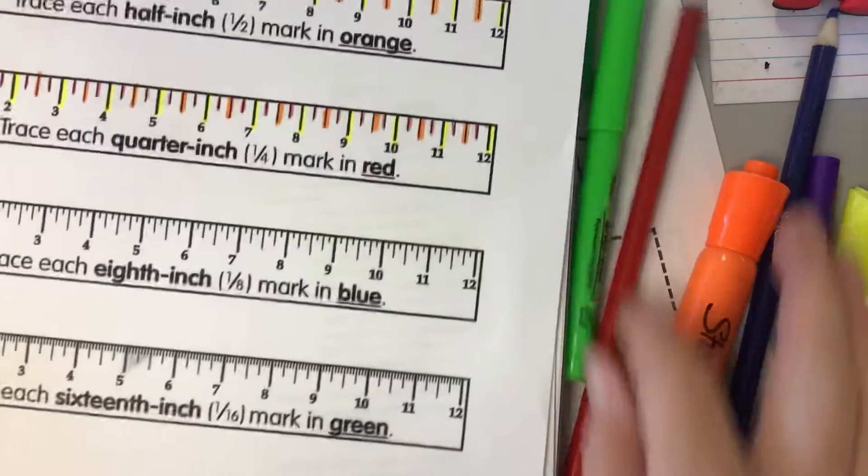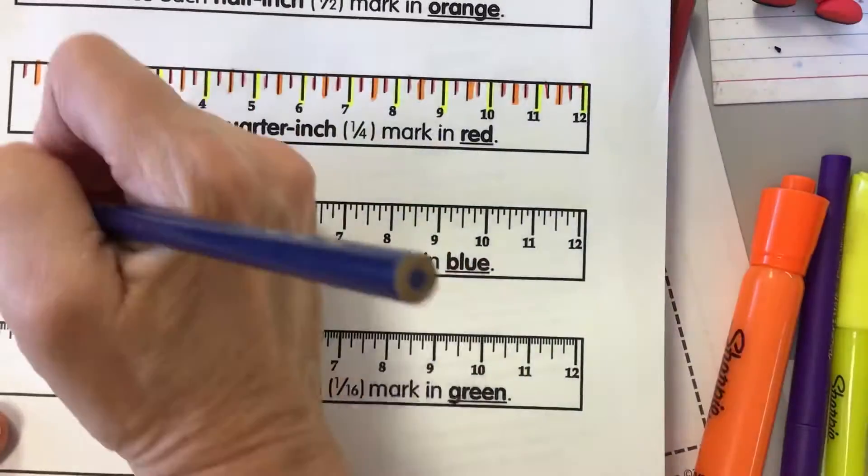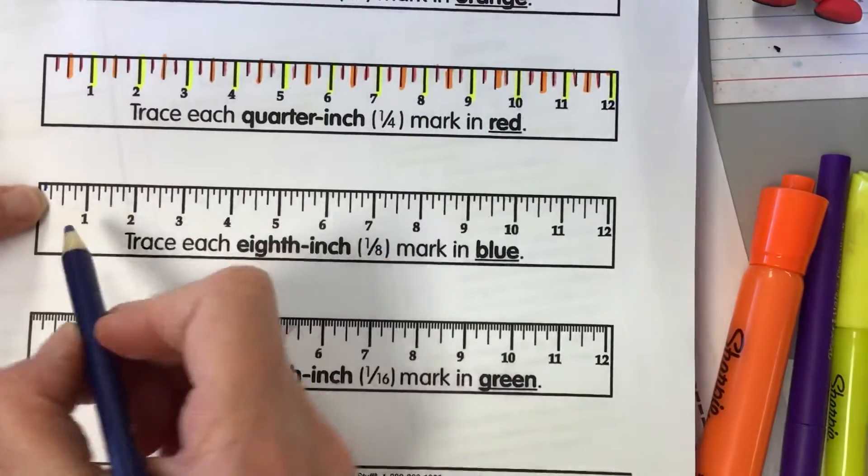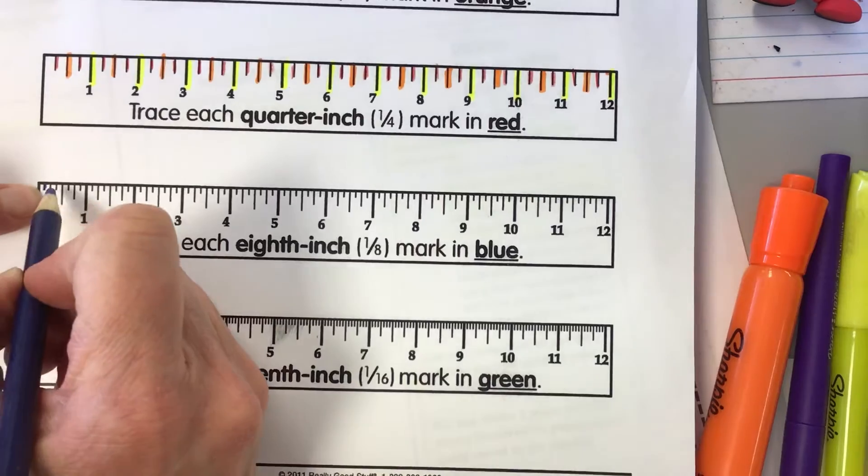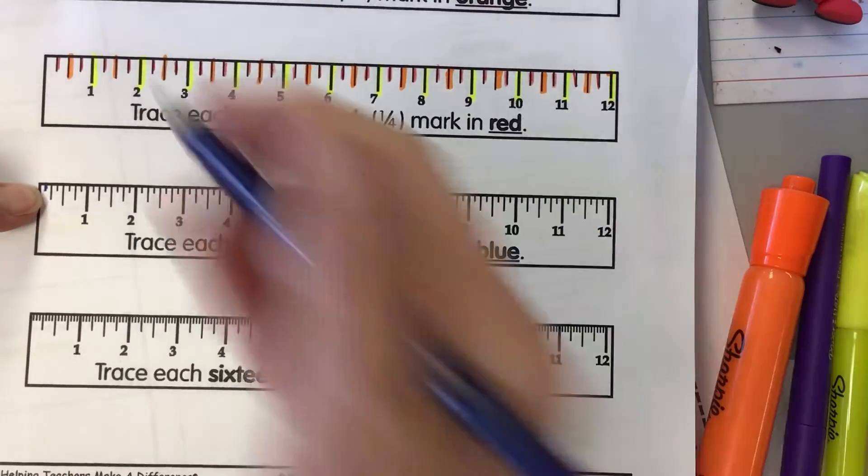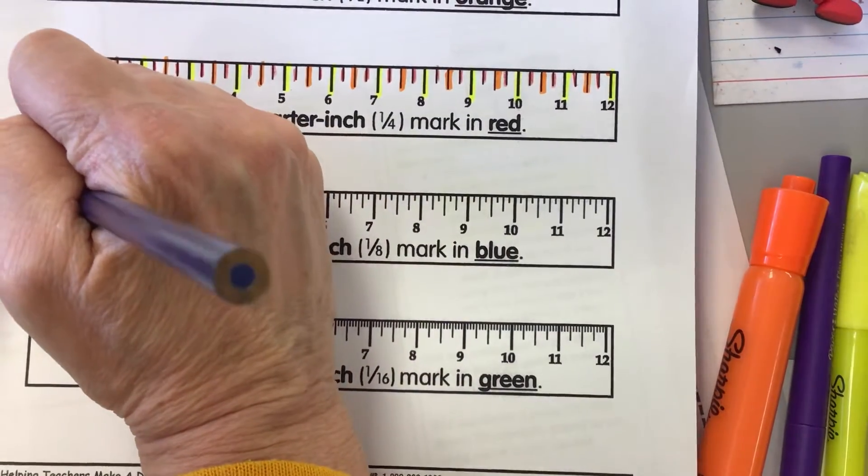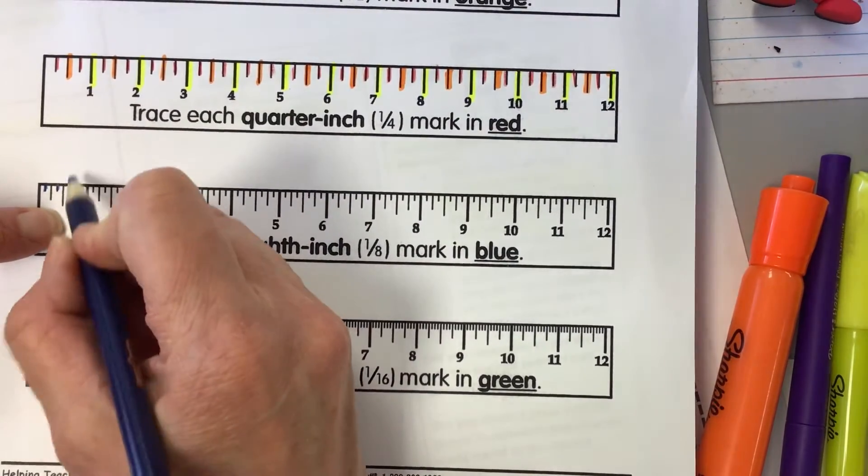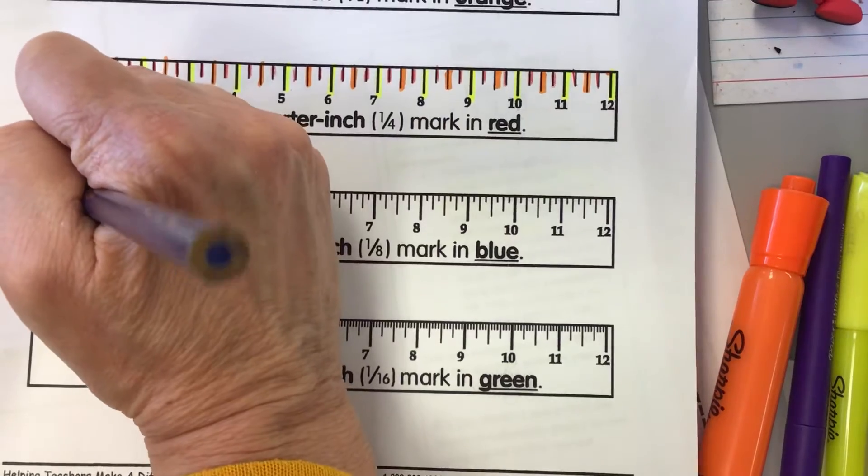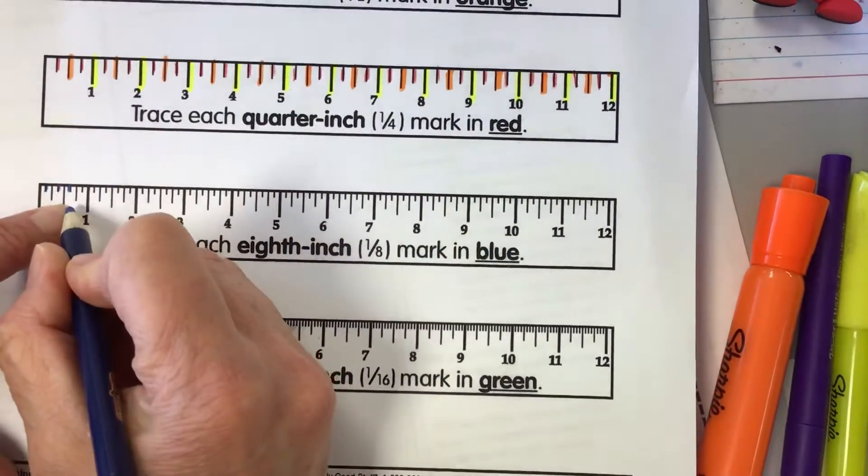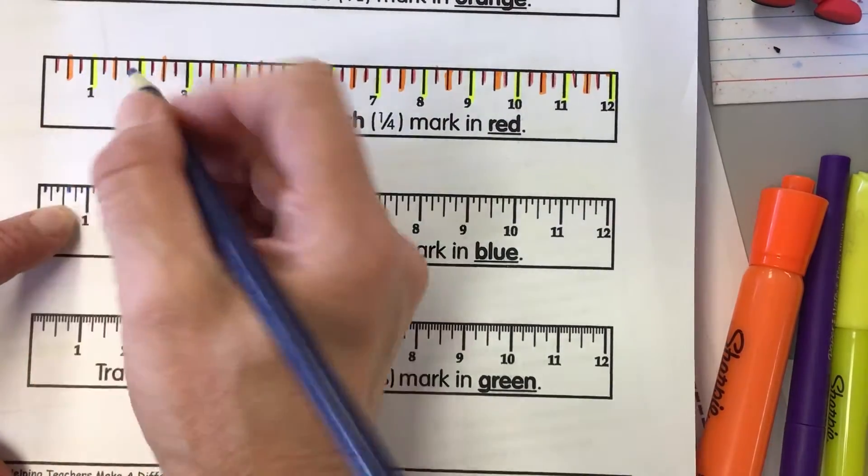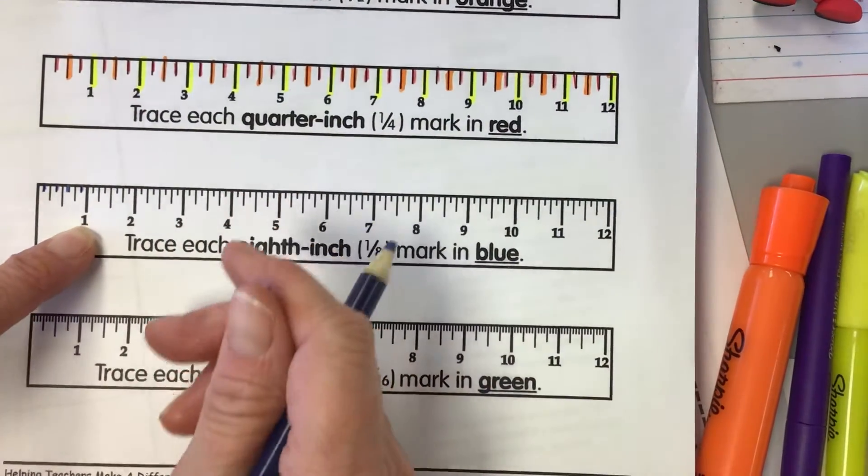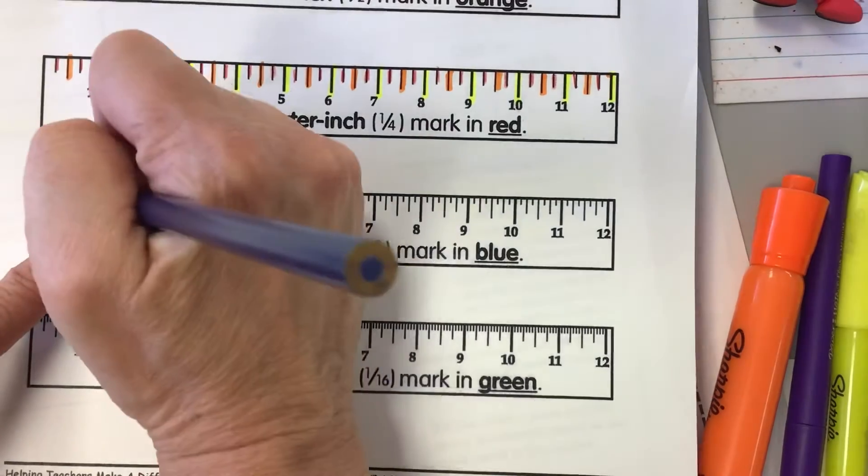So our eighth of an inches need to be in blue. And they're the shortest lines. One-eighth. The next line is two-eighths, or look, it's a little bit longer, one-fourth. Then we have three-eighths. And then look, four-eighths or one-half. It's longer. Five-eighths. Six-eighths or three-fourths. Seven-eighths. And then we have one whole, which could also be eight-eighths. Okay? So shade in each eighth mark blue.